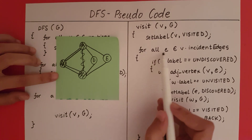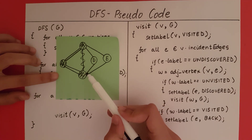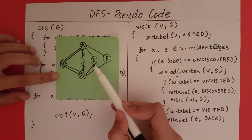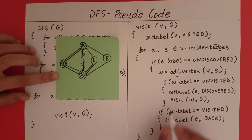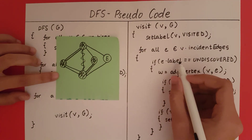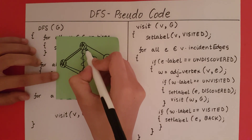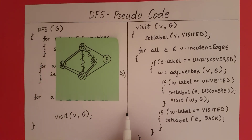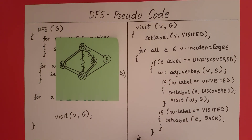We move to the next edge incident on C. It is undiscovered and the adjacent vertex W is D. D is unvisited, so we set it as a discovery edge and call visit(D, G). We set the label of D to visited. We take an undiscovered edge; W becomes A. A is visited, so we set it as a back edge. There are no more incident edges on D, so the for loop ends and we finish the visit(D) function.